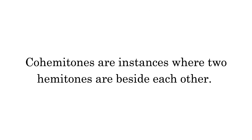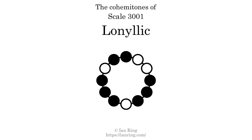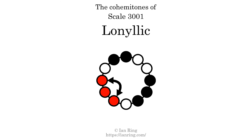Co-hemitones are instances where two hemitones are beside each other. This scale has two co-hemitones, at positions here and here.